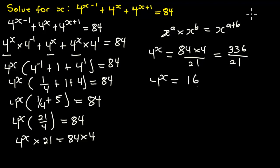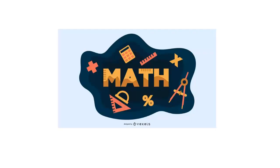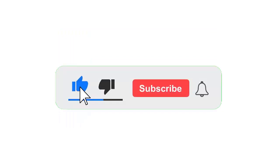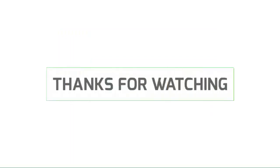336 over 21 equals 16, and 16 can be written as 4 to the power of 2. So 4 exponent x equals 4 exponent 2. Since the bases are the same, we equate the exponents, giving x equals 2. If you found this video useful, don't forget to subscribe, like, and comment. Thank you for watching.